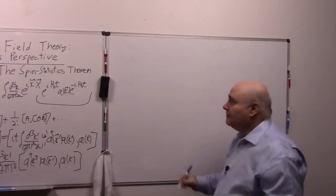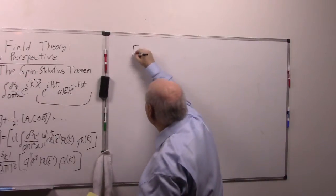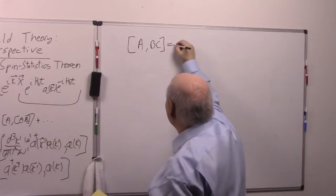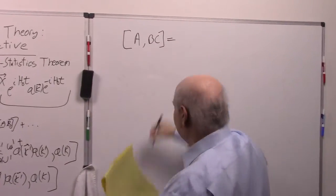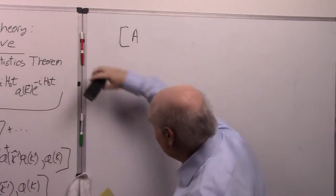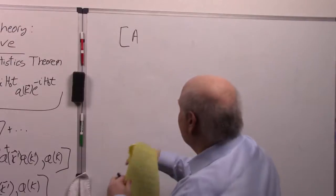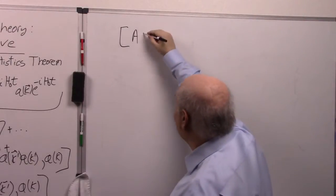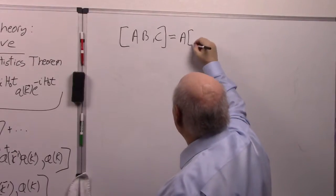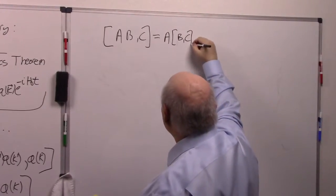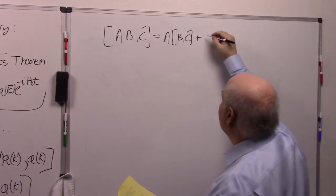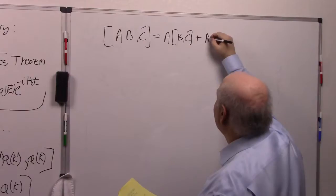All right, I'm sure you know by now standard [A,BC] equals—these are all just operators. It's equal to [A,B]C plus B[A,C].